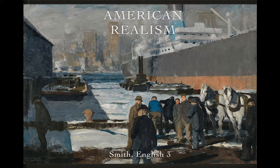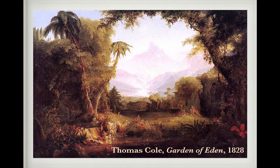Here you have a quintessential American Realist painting by John Sloan — essentially just a picture of working-class people at the docks. For contrast, here's a classic Romantic painting by Thomas Cole, founder of the Hudson River School. It's called 'The Garden of Eden' and is meant to evoke the five 'eyes' of Romanticism: inspiration, individualism, imagination, and intuition. The idea is to create a world for the audience to enter and inspire them.